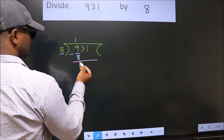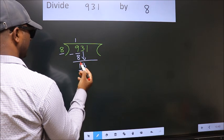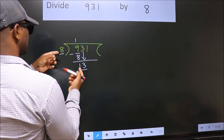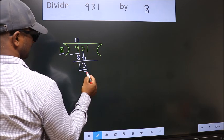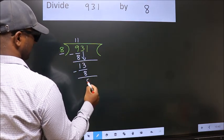After this, bring down the beside number. So, 3 down. So, 13. A number close to 13 in 8 table is 8 once 8, 14. Now, we subtract. We get 5.